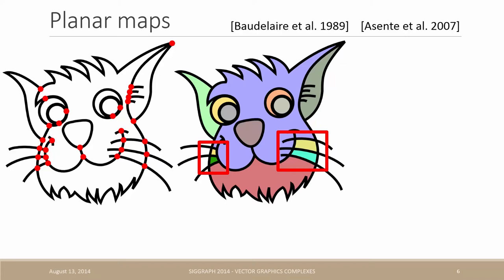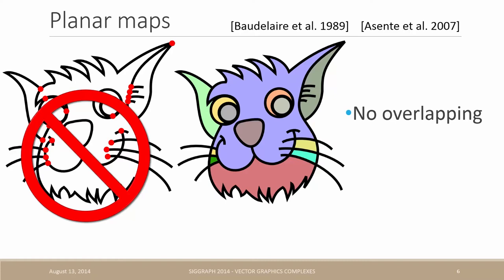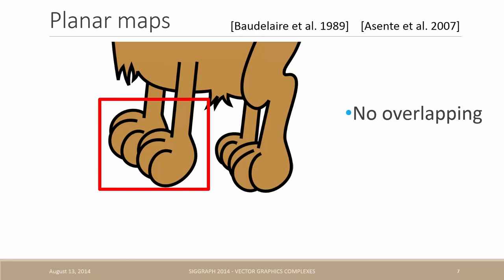However, it introduces unwanted faces caused by unwanted intersections. For instance, in this case, we would rather connect the whiskers to the interior of the face. But this is not possible because planar maps do not support overlapping. Similarly, if this cat is represented as a planar map, then the two front legs are topologically connected here, which obviously do not capture the correct semantics of this drawing.